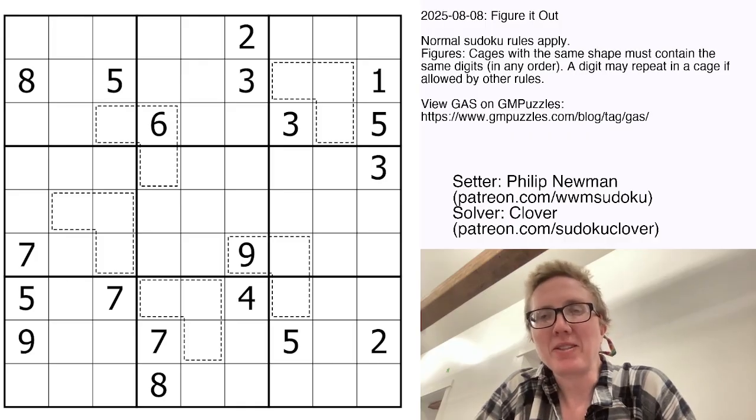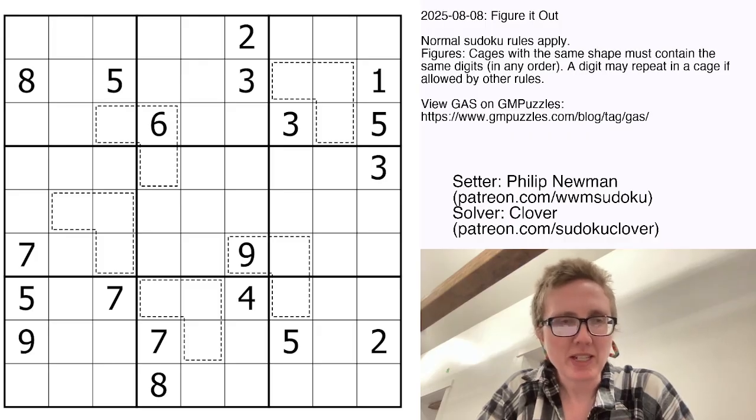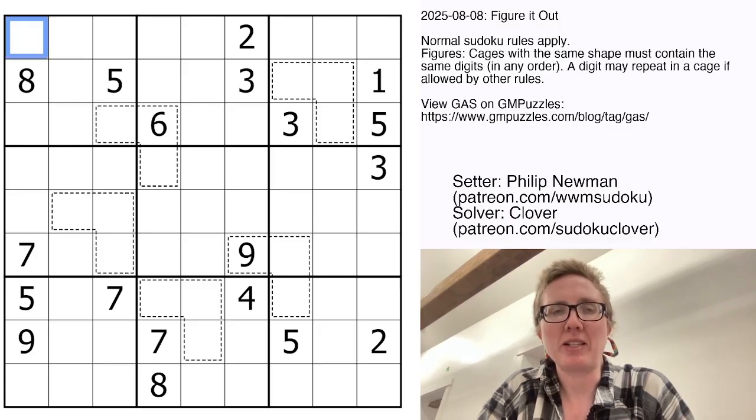This is a figure Sudoku, also called Shaken Clone Sudoku. And we have normal Sudoku rules, so we're placing the digits 1 through 9 once each in each row, each column, and each outlined 3x3 region.